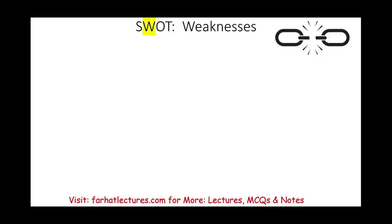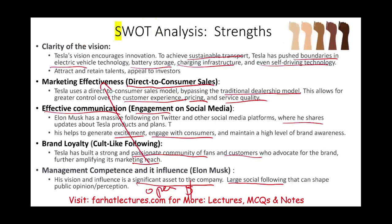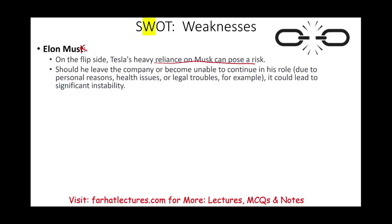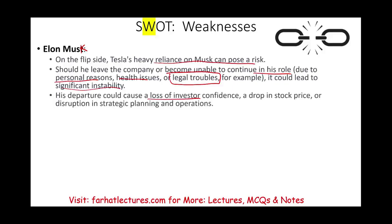Now looking at weaknesses — and notice that Elon Musk was listed under strengths, but he can also be a weakness. They are heavily relying on his image, and that poses a risk. What if he left the company or became unable to continue his role, especially given that he's busy with many other companies, or due to personal reasons, health issues, or legal trouble? He has had run-ins with regulatory agencies like the SEC. His departure could lead to significant instability, a loss of investor confidence, a drop in stock price, and disruption in strategic planning.